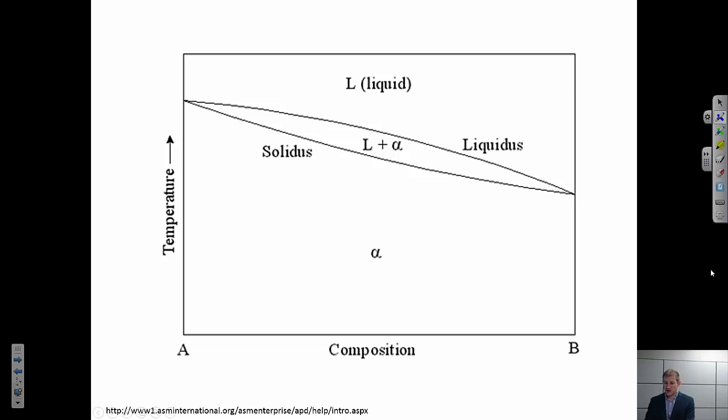Isomorphous means there's a continuous solid solution, and that means that from one end to the other at low temperatures we have a single phase present. Binary is just referring to the fact that there are two components in the system. So this is an isomorphous binary phase diagram.